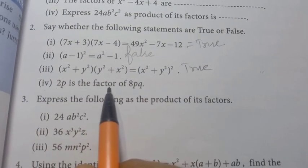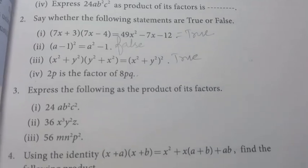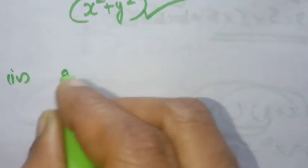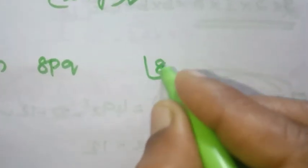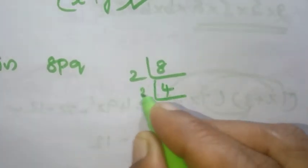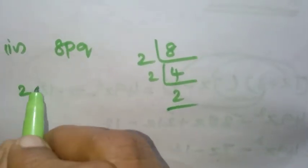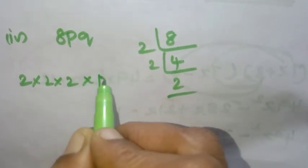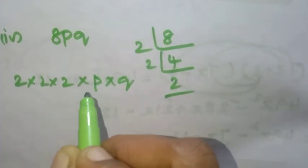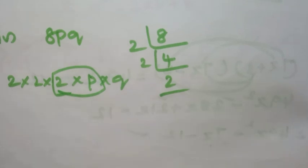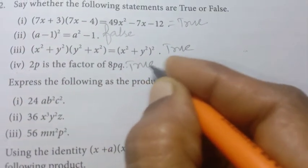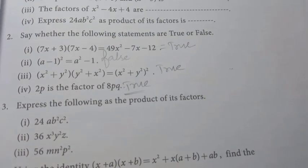Fourth true or false: 2p is a factor of 8pq. We write 8pq as 2 into 2 into 2 into p into q. Since 2p appears within these factors, 2p is indeed a factor of 8pq. The statement is true.